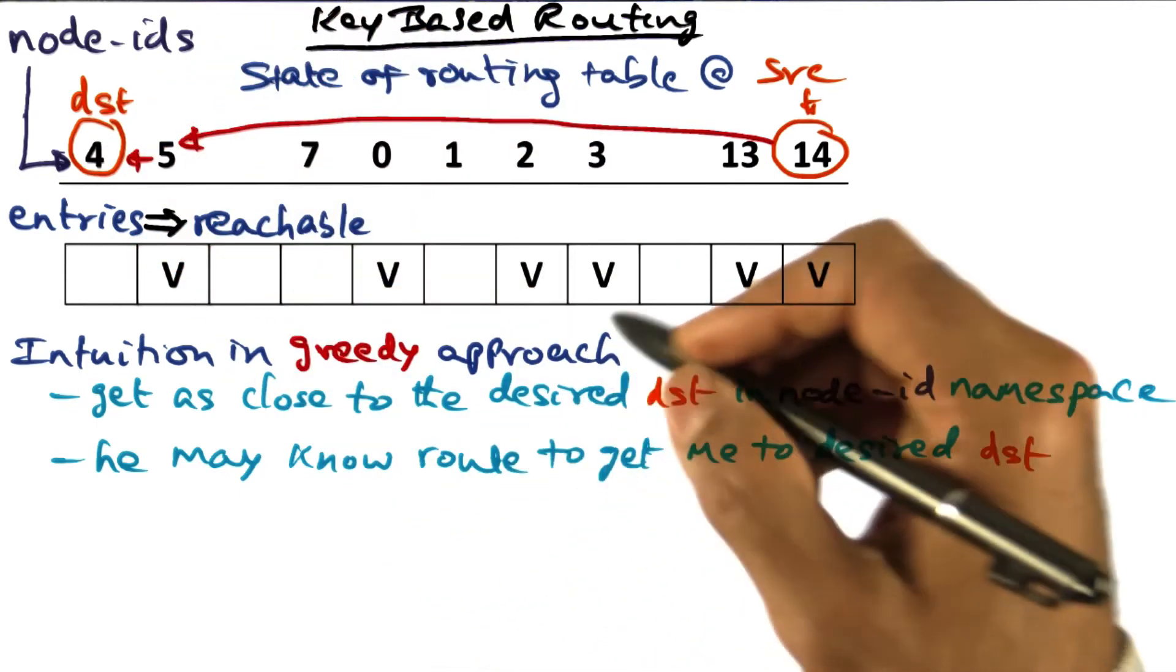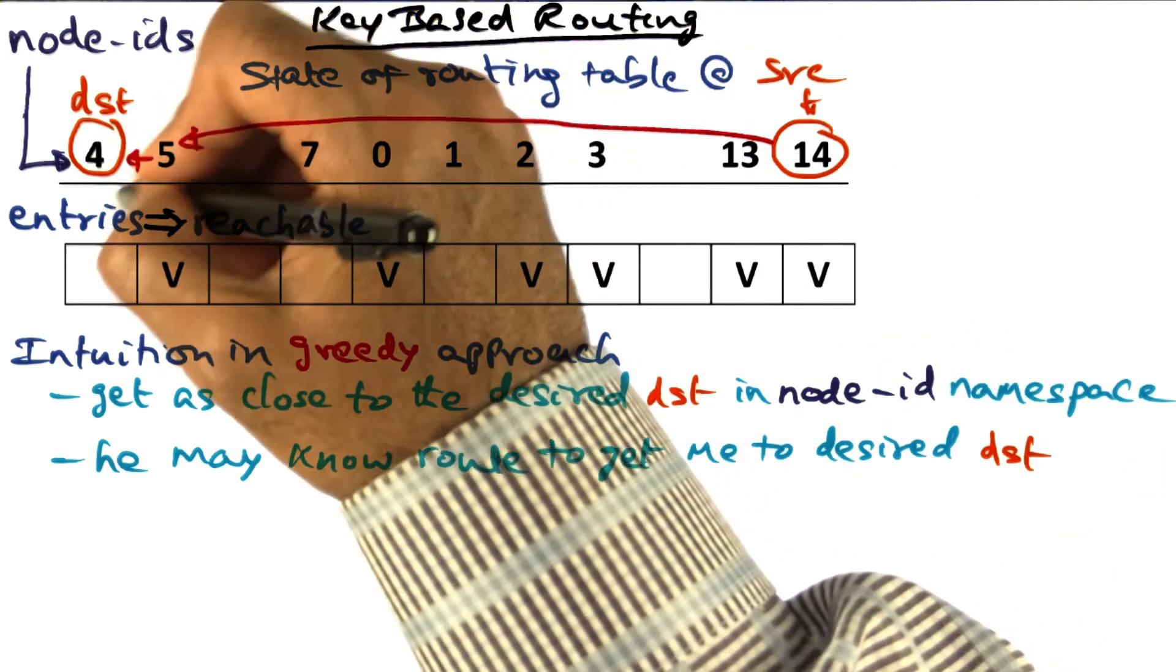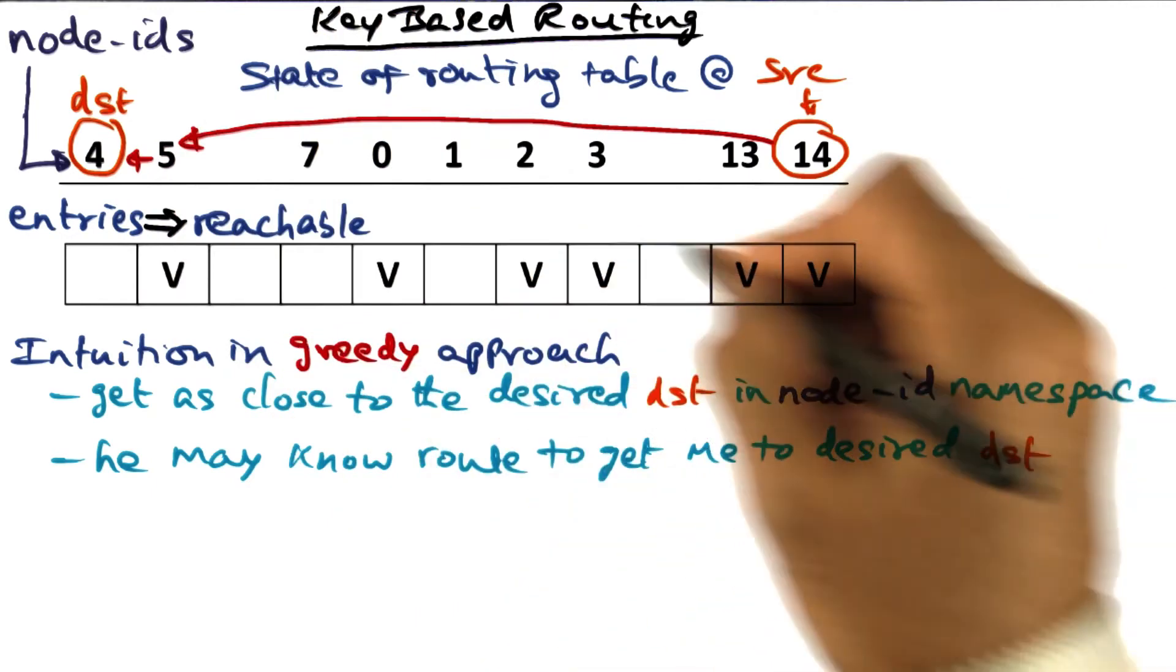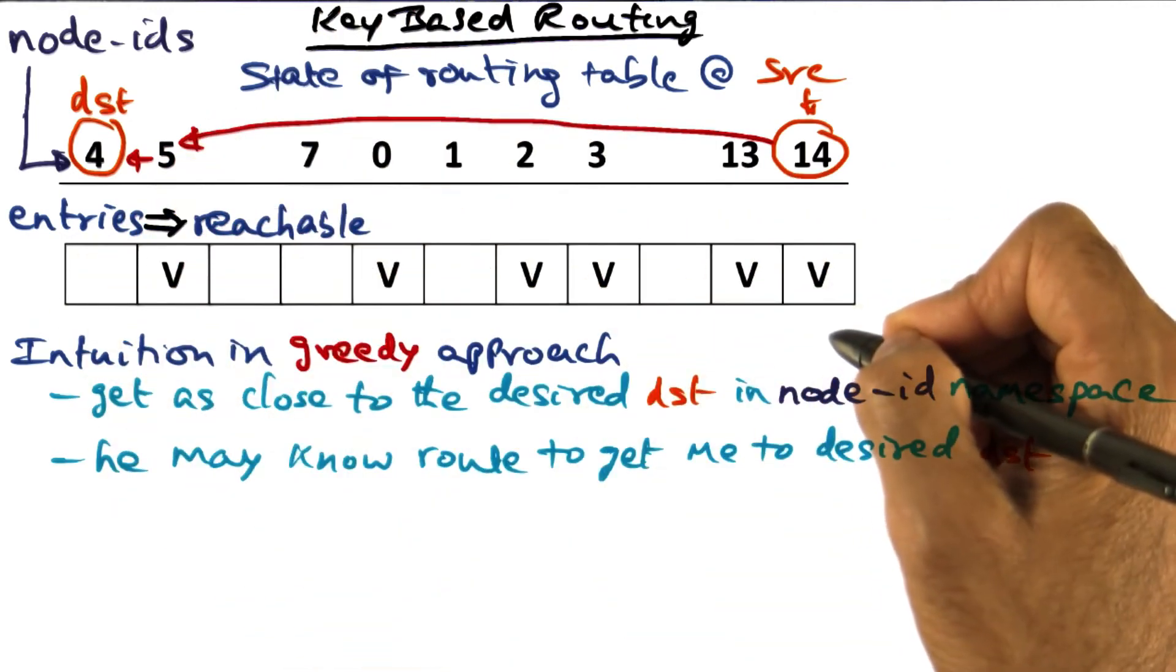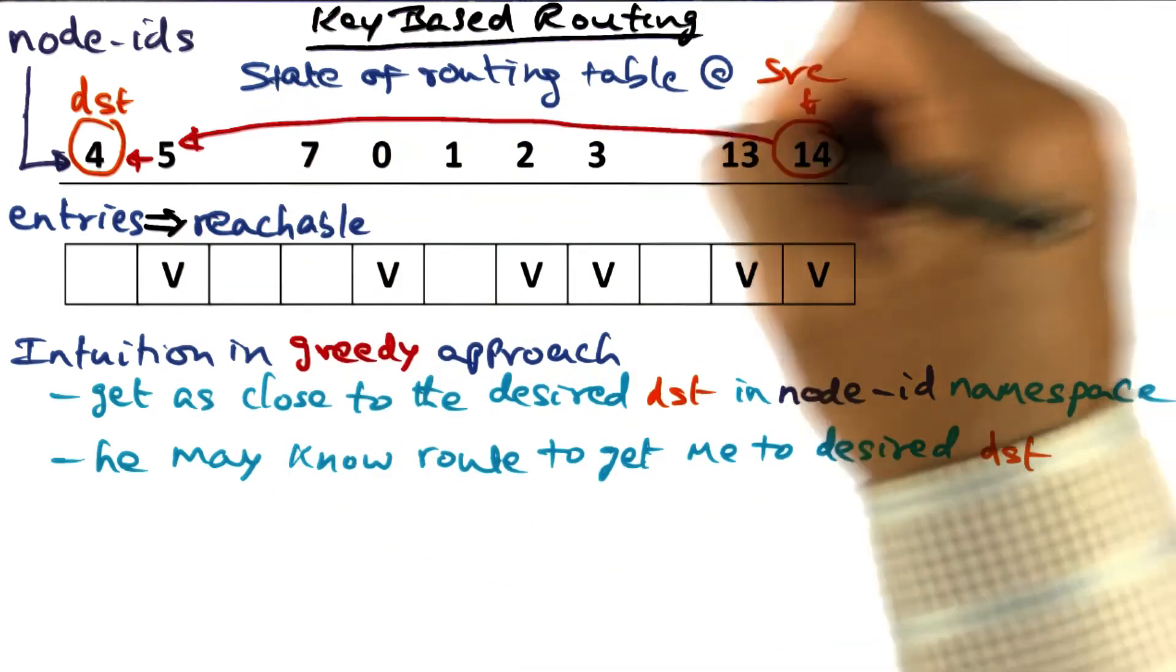That's the idea in greedy routing: take the minimum number of hops to get to the desired destination by using information available in my user-level routing table, which has information about nodes reachable from me directly.